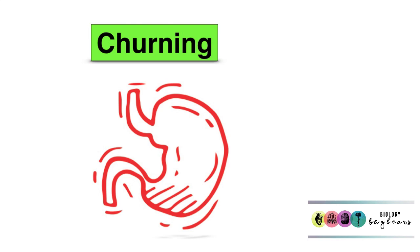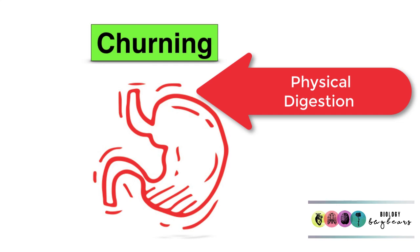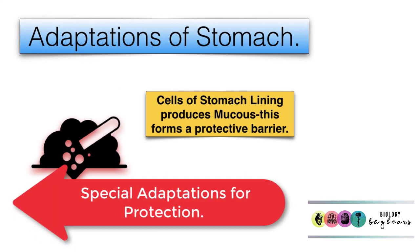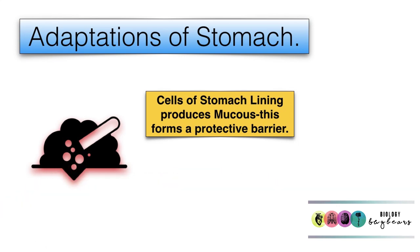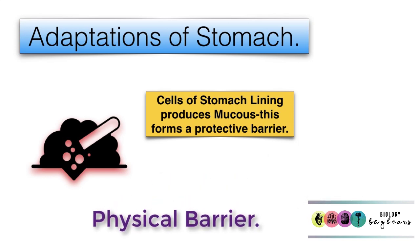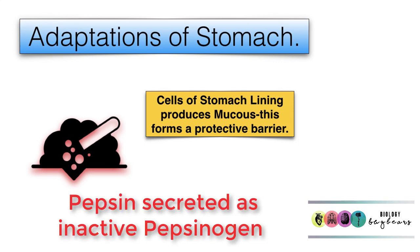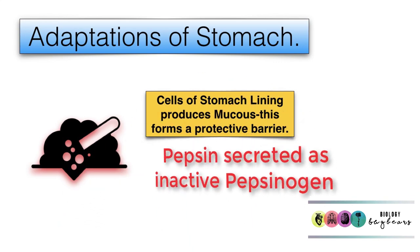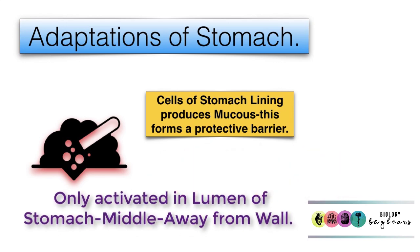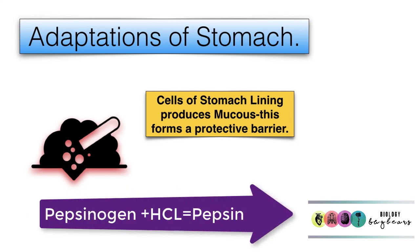In addition to chemical digestion, physical digestion also takes place in the stomach as the contents are churned and mixed thoroughly. It's very important that the stomach has some protection against the acid and the protease. Cells lining the stomach produce mucus, which is slightly alkaline and neutralises the hydrochloric acid, and also creates a physical barrier. It's also important to remember that pepsin is secreted in an inactive form and is not activated until it is in the lumen of the stomach, away from the wall, mixing with the hydrochloric acid.